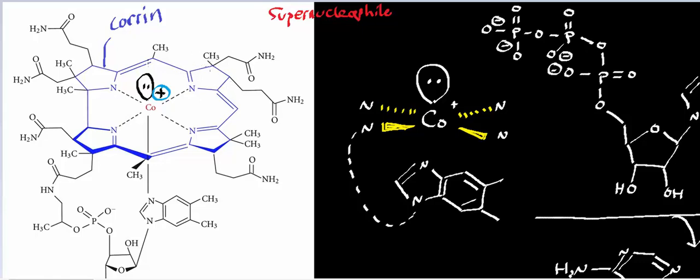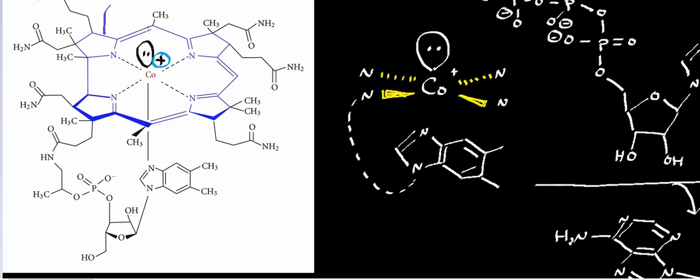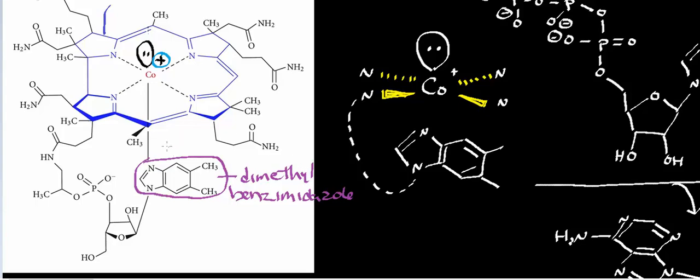This ring system highlighted in blue is called the corrin ring, and it ultimately comes from uroporphyrinogen III — which is part of heme synthesis and also covered in this playlist. Cobalt has to be in the plus-one state for it to be a super nucleophile. Now to orient you with terminology used to describe vitamin B12s: you have the corrin ring system, but you also have two types of ligands. This ligand right here is called dimethylbenzimidazole.